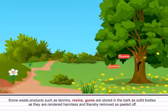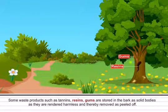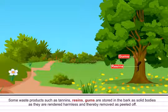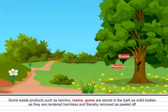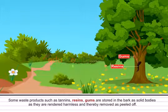Number five, some waste products such as tannins, resins, gums are stored in the bark as solid bodies as they are rendered harmless and thereby removed as peeled off.